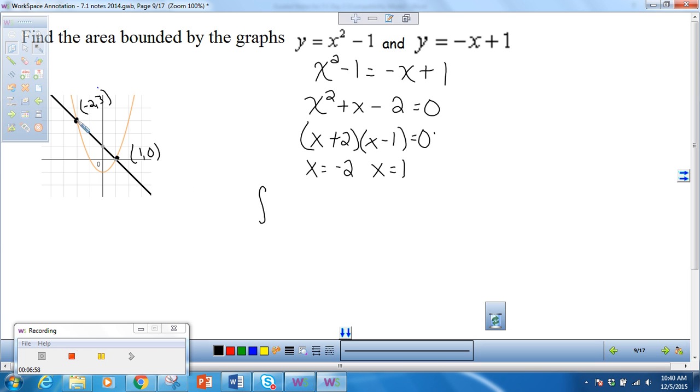My limits of integration, I'm going to integrate X values from negative 2 to 1. And the linear function is on top. So that's going to be negative X plus 1 minus X squared minus 1. We can combine like terms. We get the integral from negative 2 to 1 is negative X squared minus X plus 2. And then from there, we can integrate.